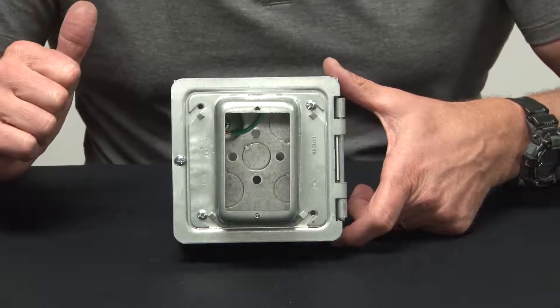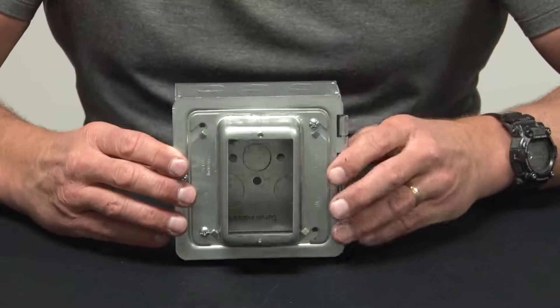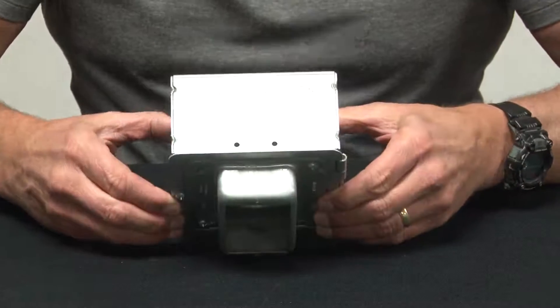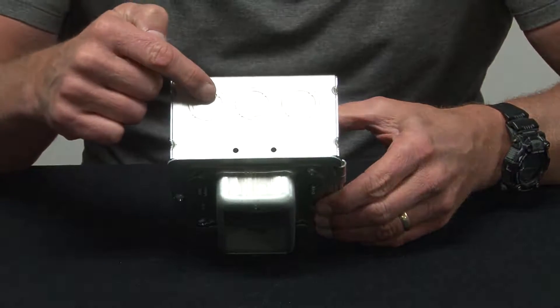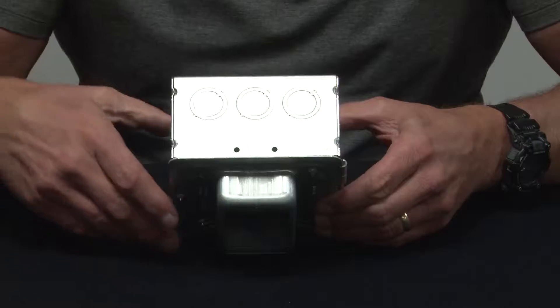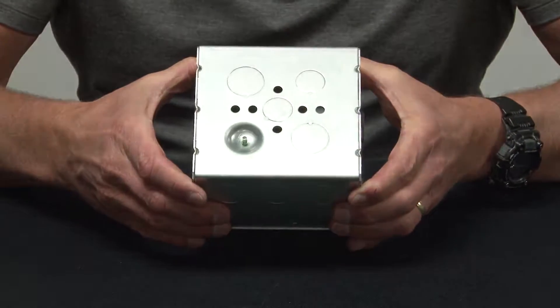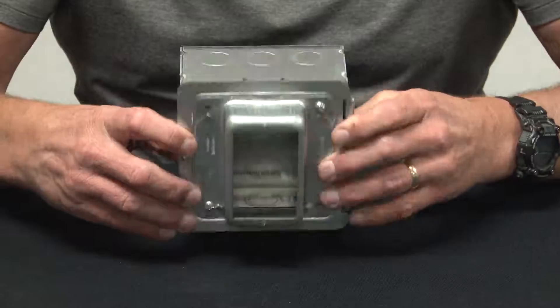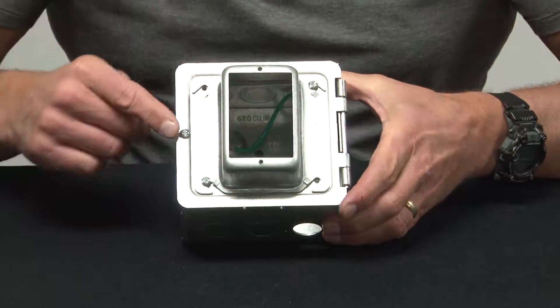Garvin Industries' new 5-inch square hinged prefab box comes with three half-inch and three-quarter-inch concentric knockouts on all four sides, as well as three-quarter and half-inch knockouts on the bottom. This particular box has a hinged door that opens up.